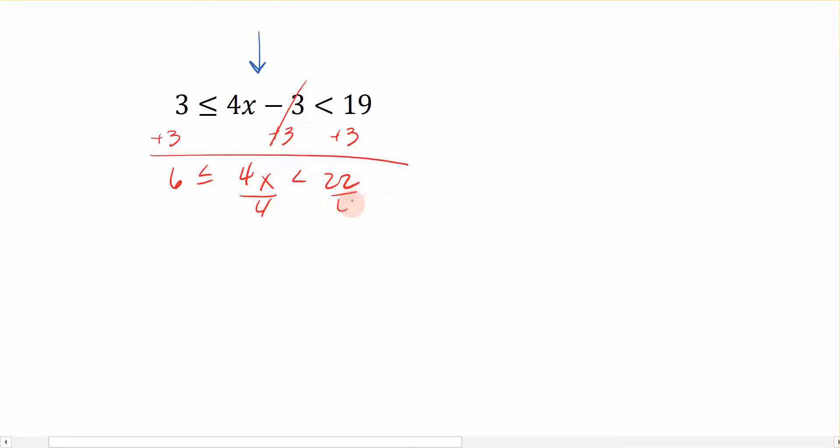So divided by 4, divided by 4, and divided by 4. So now, reading from the center, x is greater than or equal to 3 halves, because 6 fourths reduced as 3 halves. And x is less than, what would that be? 11 over 2. So x is greater than or equal to 3 halves, but less than 11 halves.